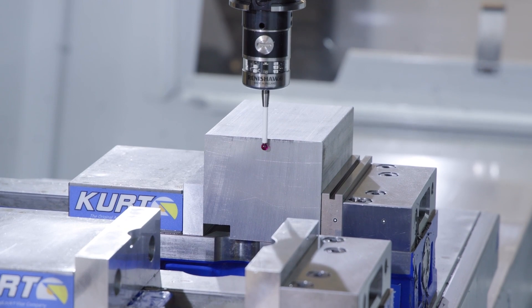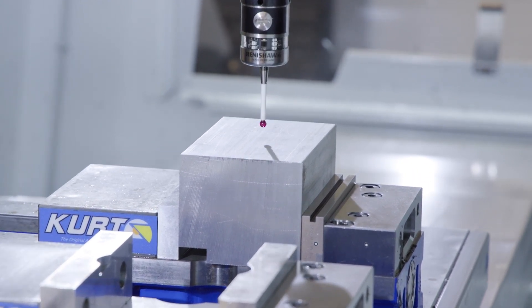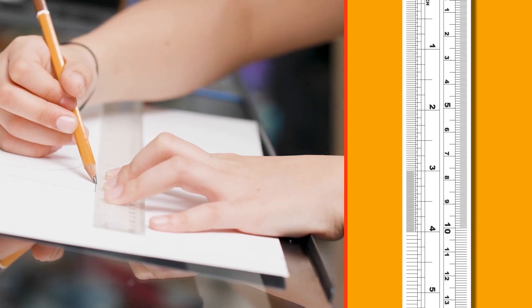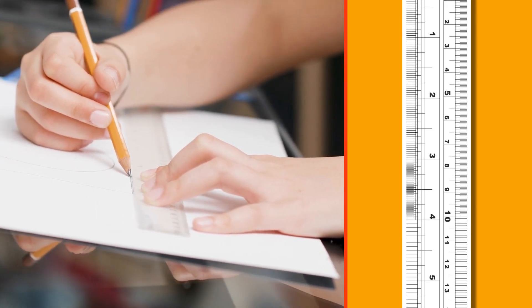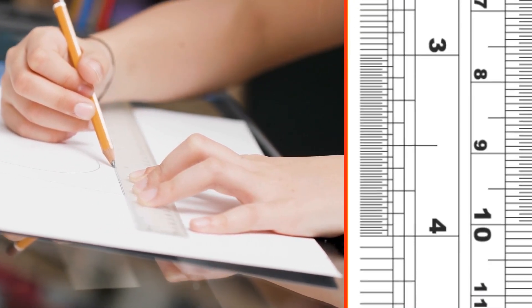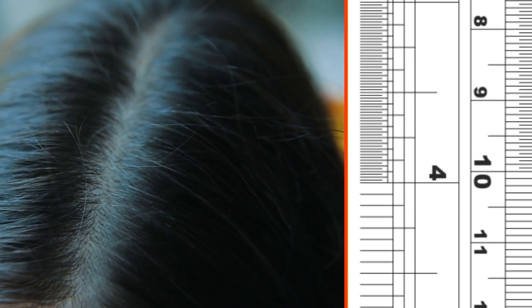Machinists use super precise measurements to make sure their tools cut exactly what they want to make. You probably know how to measure in feet or inches, but machinists measure in thousandths of an inch. That's thinner than a piece of hair on your head.